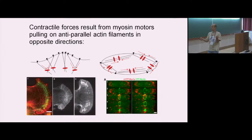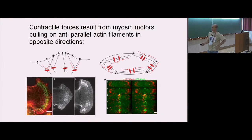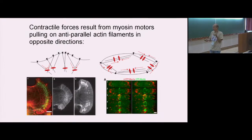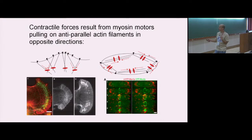In an experiment, actin (labeled red) fills the leading edge and myosin (labeled green) sits a little back from the edge. When a drug blocking myosin contractility is applied, the cell edge shoots outward — showing that much of the actin's pushing force was being counterbalanced by myosin's contractile pull. Once that contractility is released, the actin pushing force becomes much more effective and the leading edge extends rapidly.